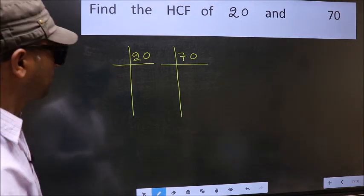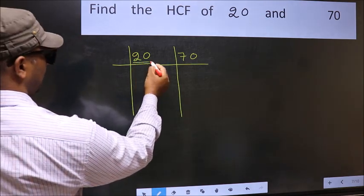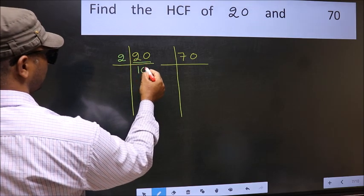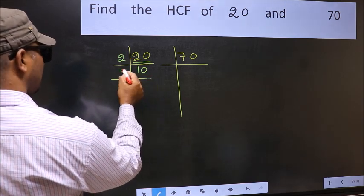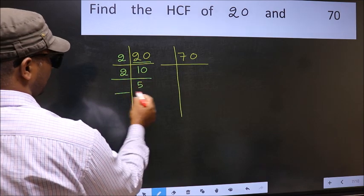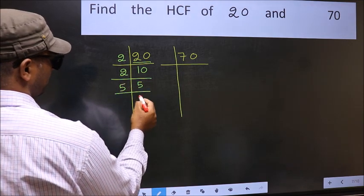Next, here we have 20. 20 is 2 tens. Now 10 is 2 fives. 5 is a prime number, so 5 once 5.